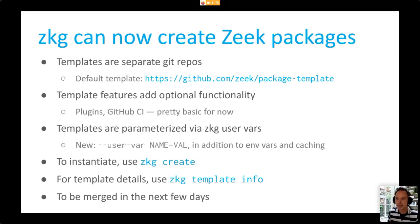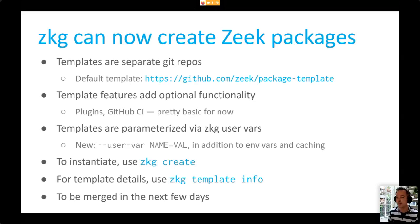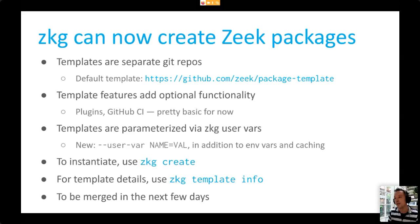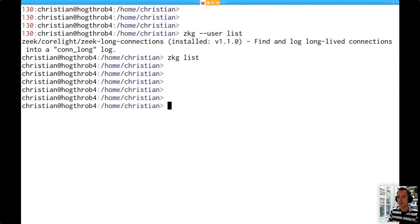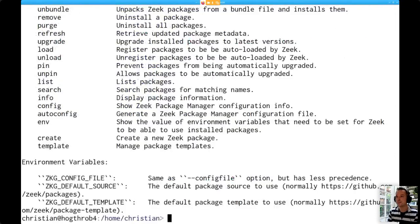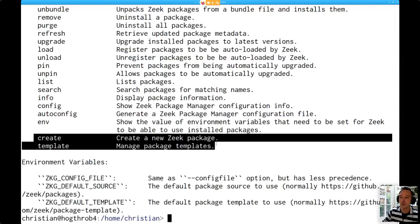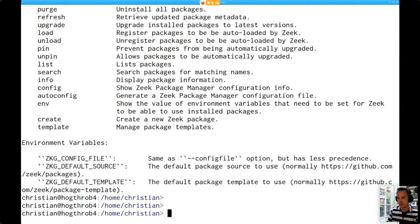To instantiate a package there's a new command: ZKG create. For details about a template - like what features are in it or what versions it provides - there's a new command called 'ZKG template info' that gives you information about a given template. This is in code review right now and should go in within the next few days. If you just do ZKG help, you'll notice there are a couple of new commands. Let me show you the help output for the create command.